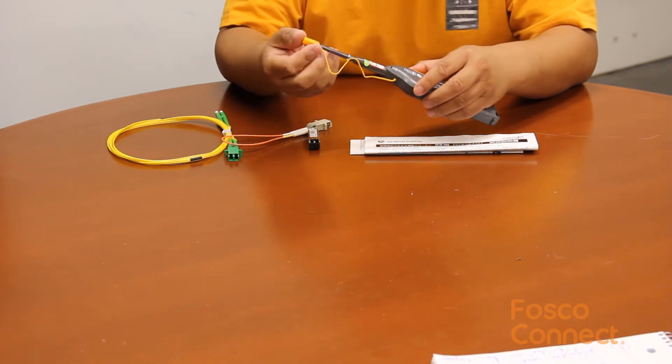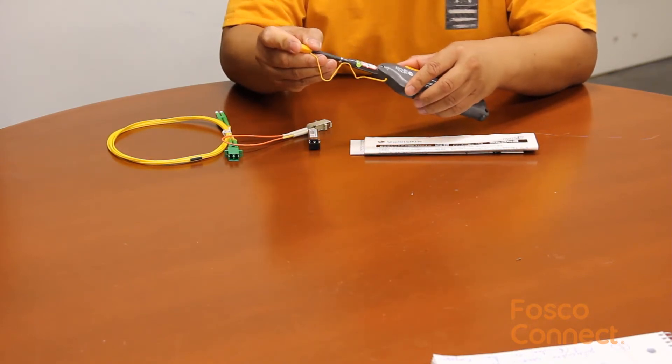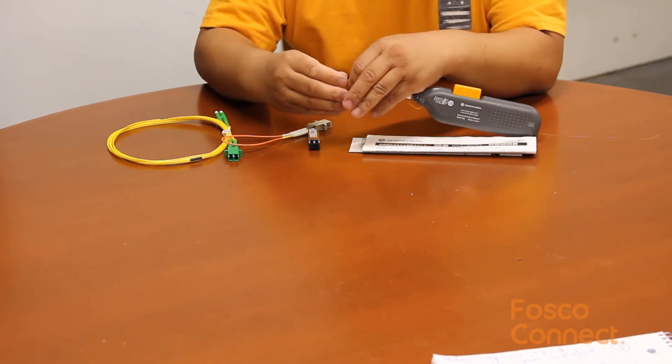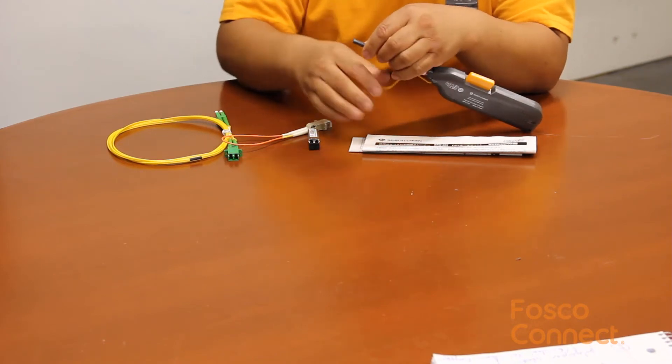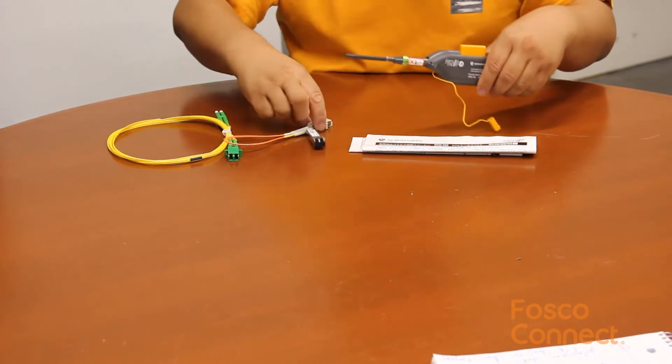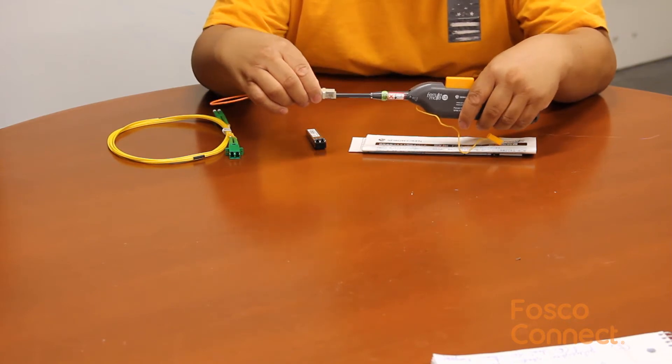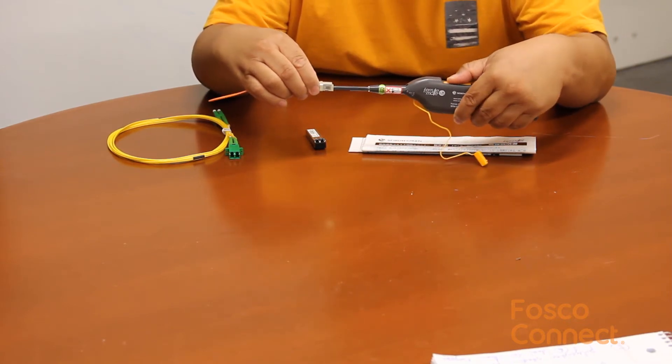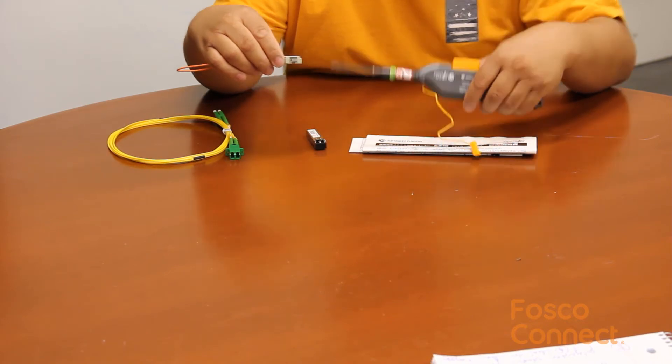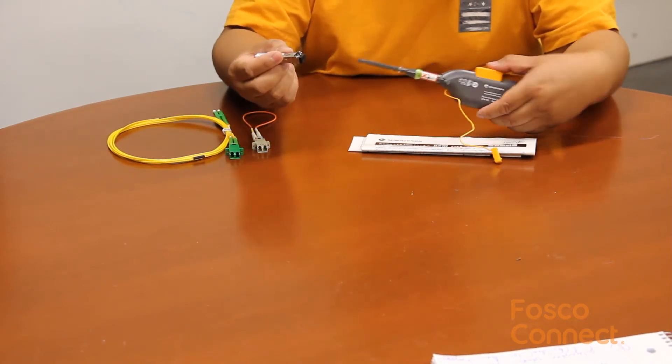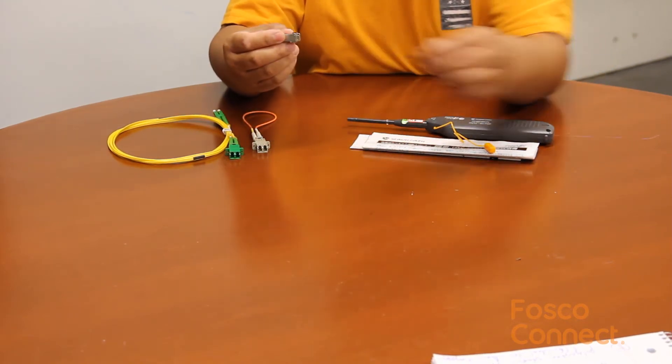To clean connectors inside a patch panel or bulk kit, remove the protection cap, and insert the cleaner into the bulk kit until it stops. Keep the pressure, then press the click button once to clean. This makes the cleaner especially useful for cleaning transceiver ports.